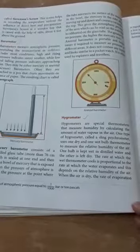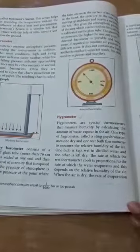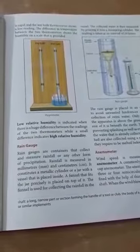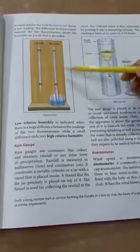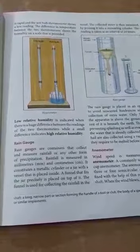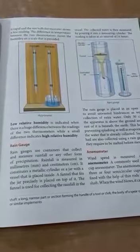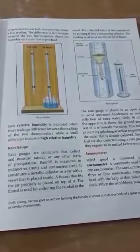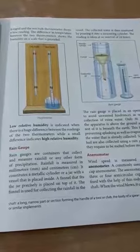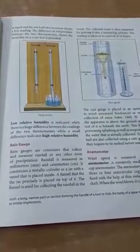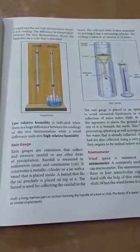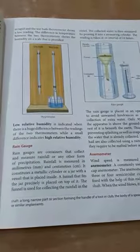One bulb is kept wet in distilled water and the other is left dry. The rate at which the wet thermometer cools is proportional to the rate at which the water evaporates, and this depends on the relative humidity of the air. When the air is dry, the rate of evaporation is rapid and the wet bulb thermometer shows a low reading. The difference in temperature between the two thermometers shows the humidity on a scale that is provided. Low relative humidity is indicated when there is a huge difference between the readings of the two thermometers while a small difference indicates high relative humidity.